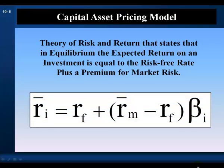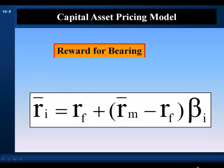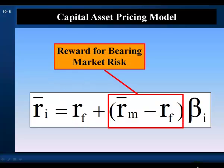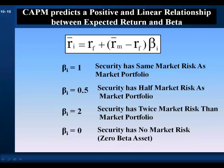The capital asset pricing model, also called CAPM, is a theory of risk and return that states in equilibrium the expected return on an investment is equal to the risk-free rate plus a premium for market risk. The risk-free rate reflects the time value of money, the market risk premium is the reward for bearing market risk, and beta is a measure of the amount of asset I's market risk. CAPM predicts a positive and linear relationship between expected return and beta.